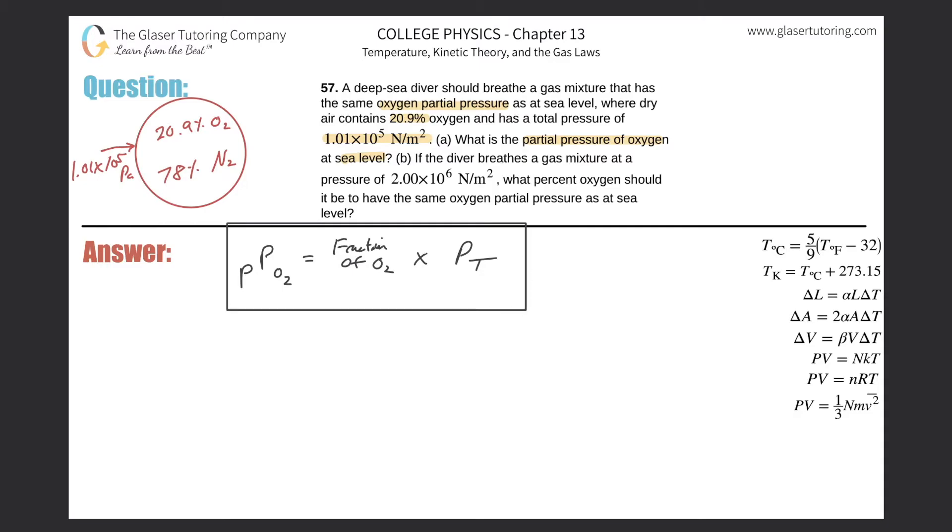So watch. Partial pressure of oxygen would equal the fraction of oxygen present in the sample, and it's given as a percent, but convert that into a decimal. So this is 0.209. Then multiply it by the total pressure, that's 1.01 times 10 to the fifth. And voila, we will get our answer.